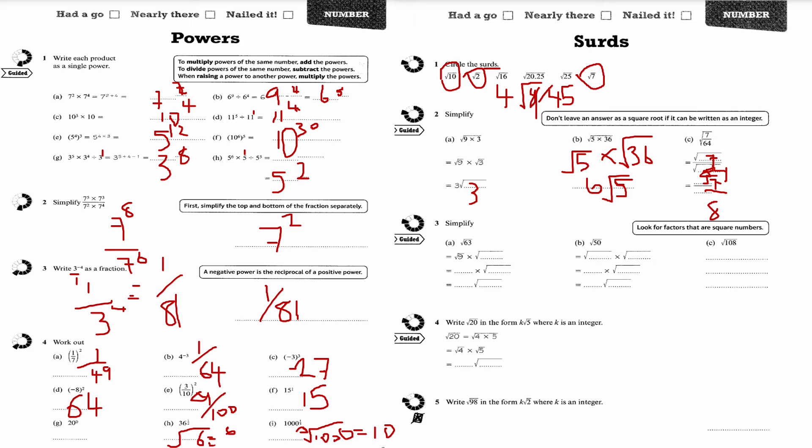Root 63 is root 9 times root 7. Root 9 is 3, so 3 times root 7 is 3 root 7.